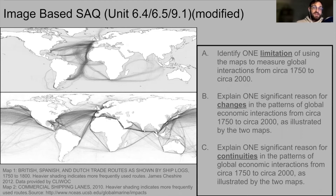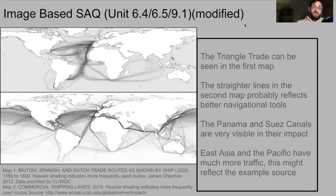We have three questions attached to this. One: identify one limitation of using the map to measure global interactions. Two: reason for change in the patterns of global economic interactions from 1750 until now. Three: reason for continuities in those patterns. So basically, change, continuity, and a limitation. This is literally my favorite SAQ because there's so much detail.